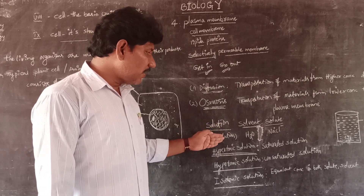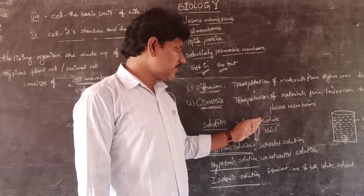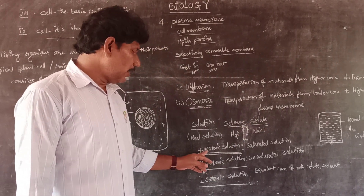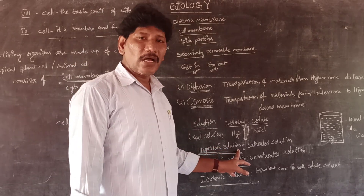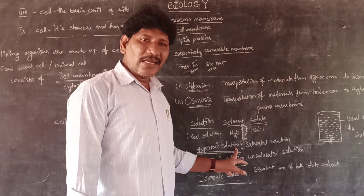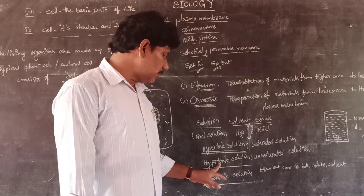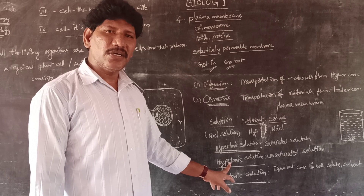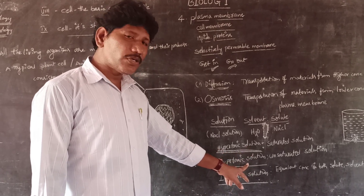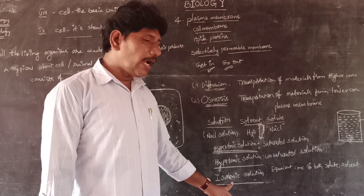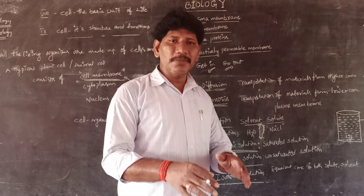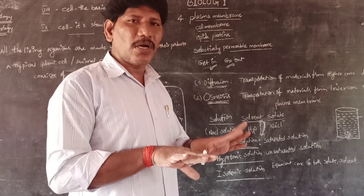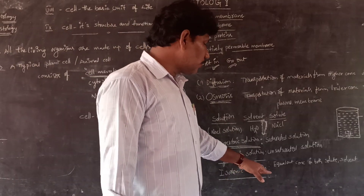Based on the concentration of the solute, solutions are mainly of three kinds: hypertonic solution — meaning high concentration or concentrated solution; hypotonic solution — meaning low concentration or diluted solution; and isotonic solution — where both the solute and solvent are present in the same concentration.